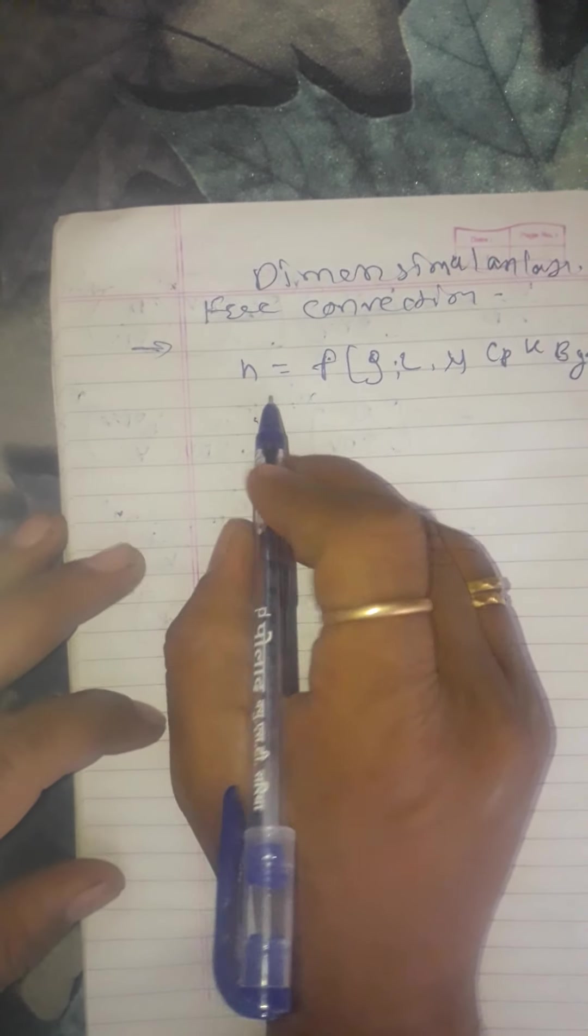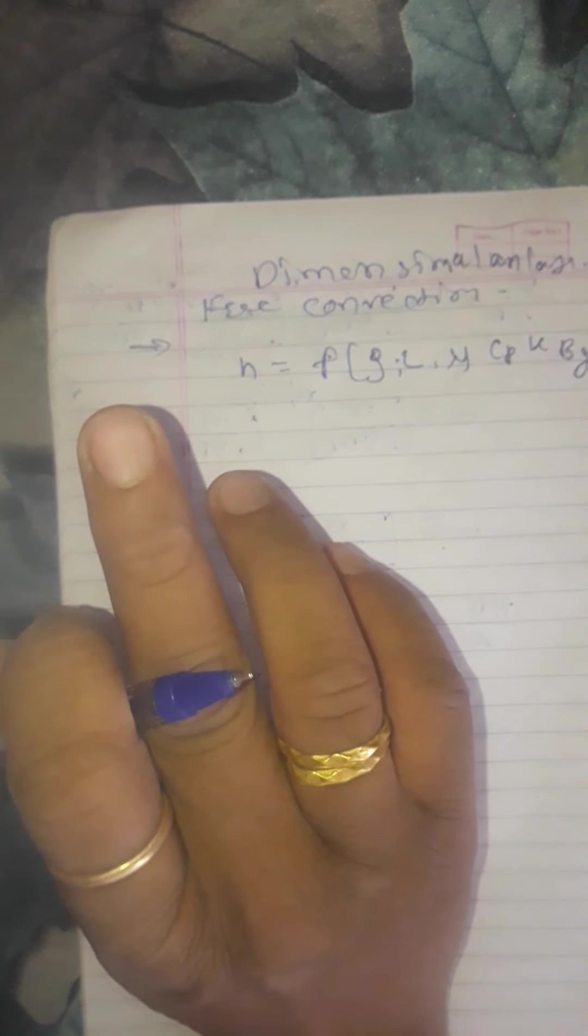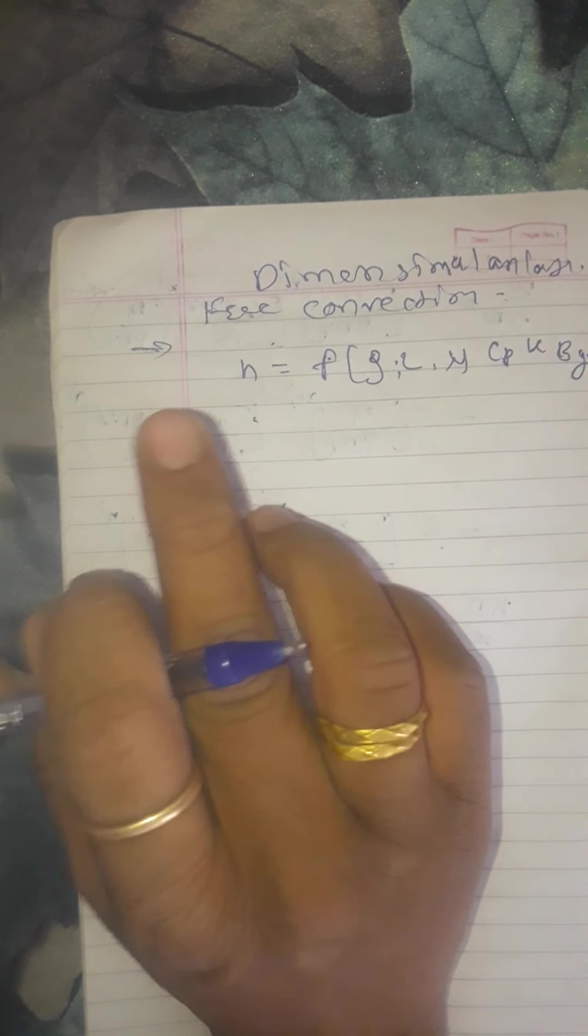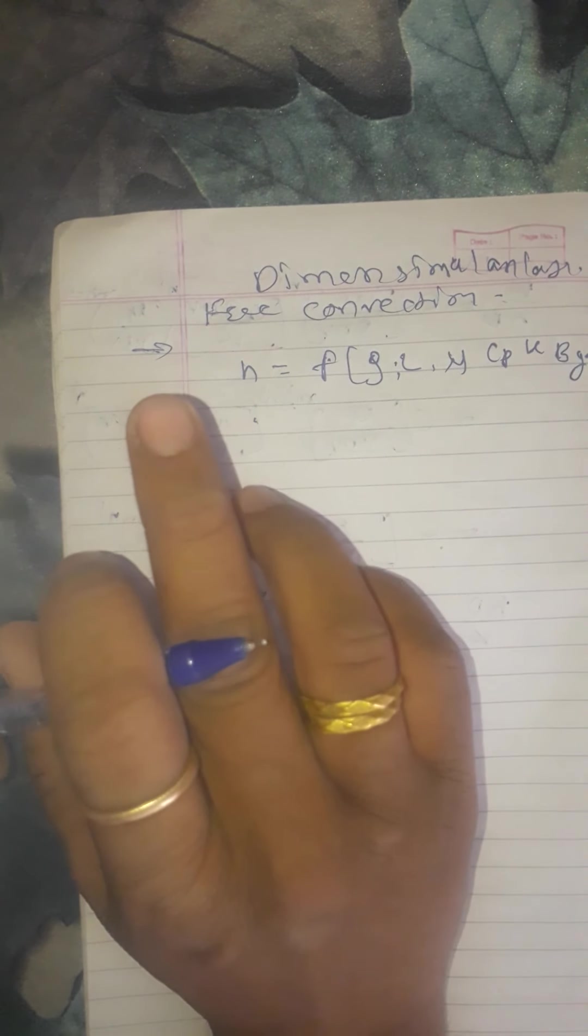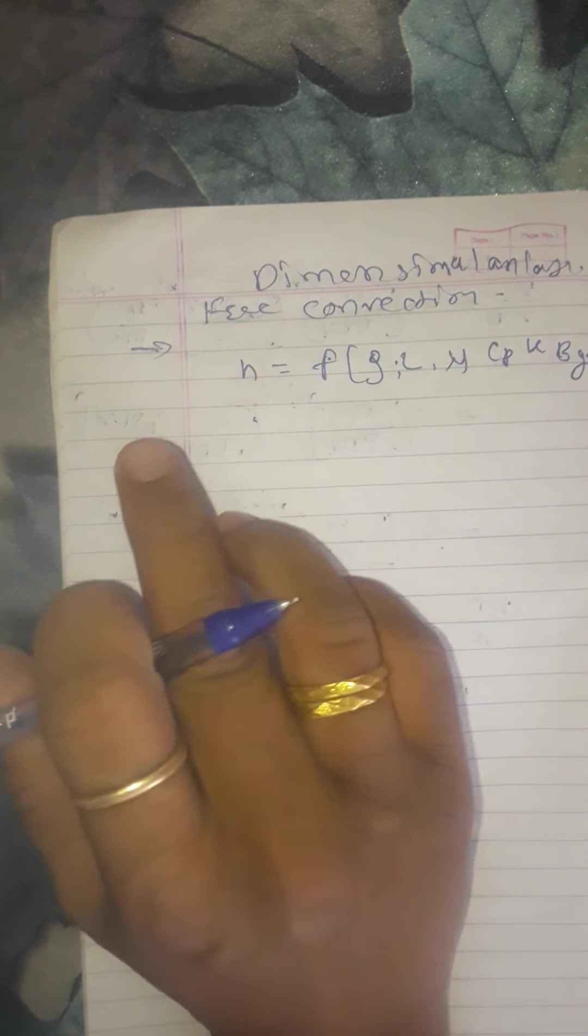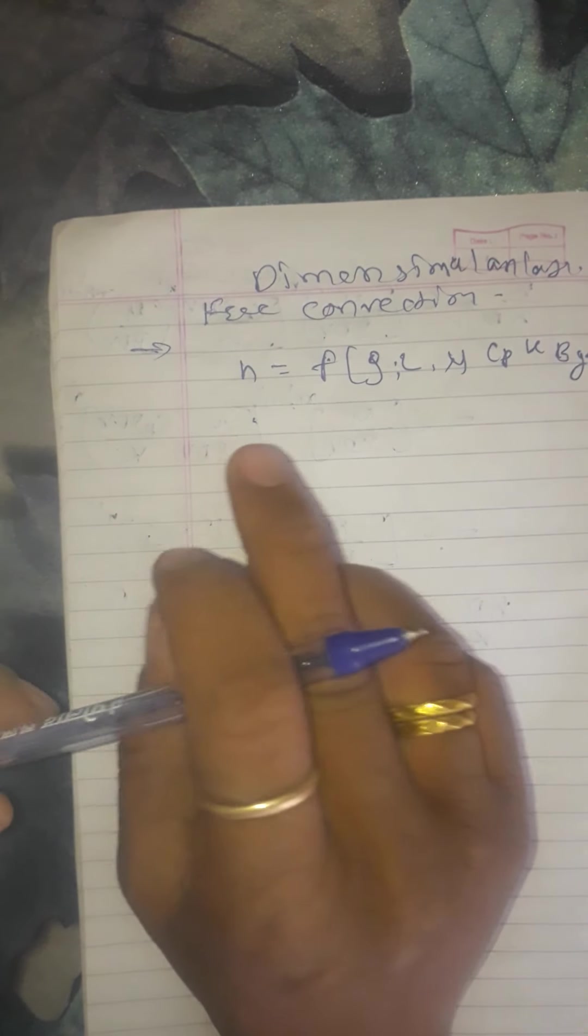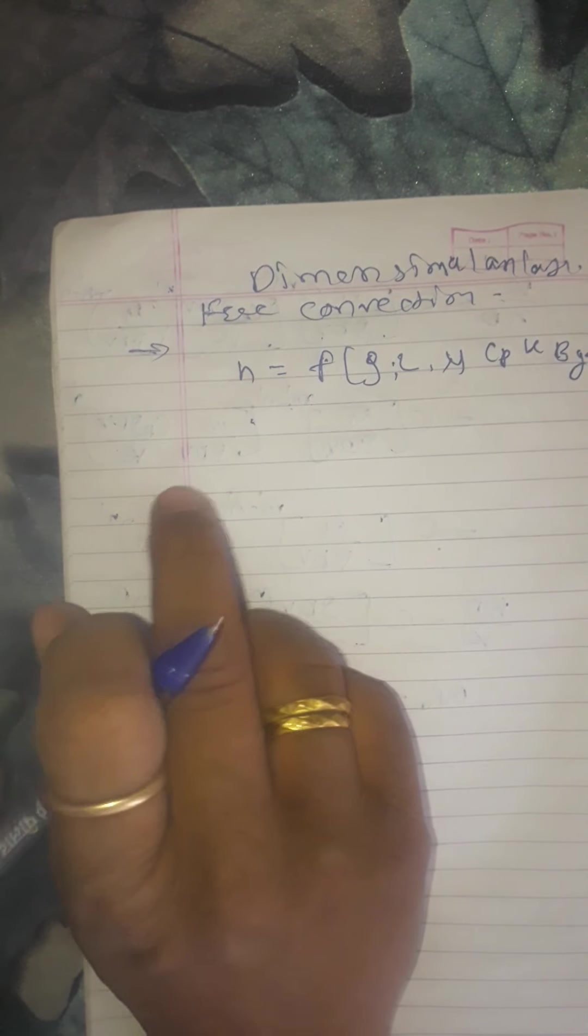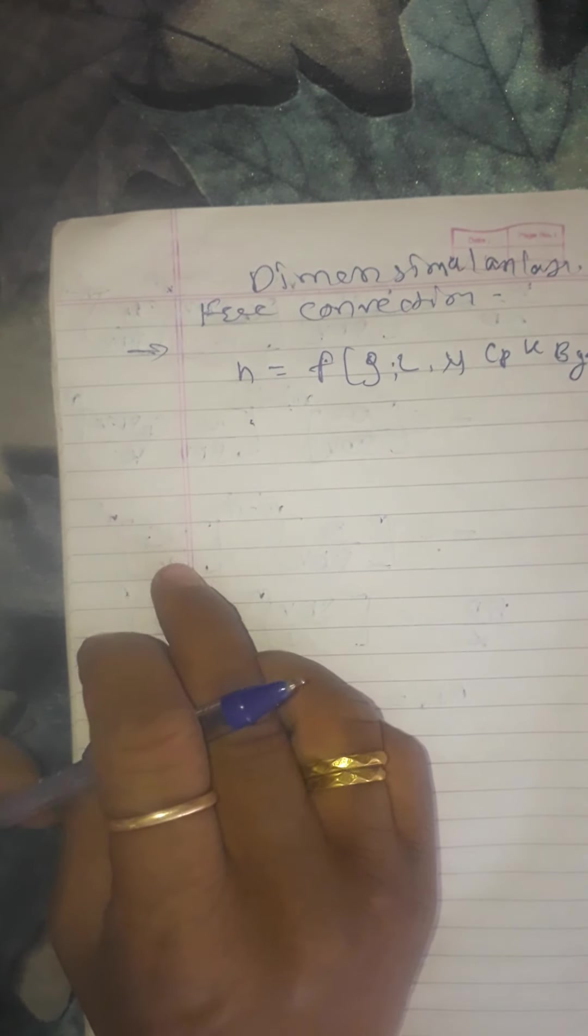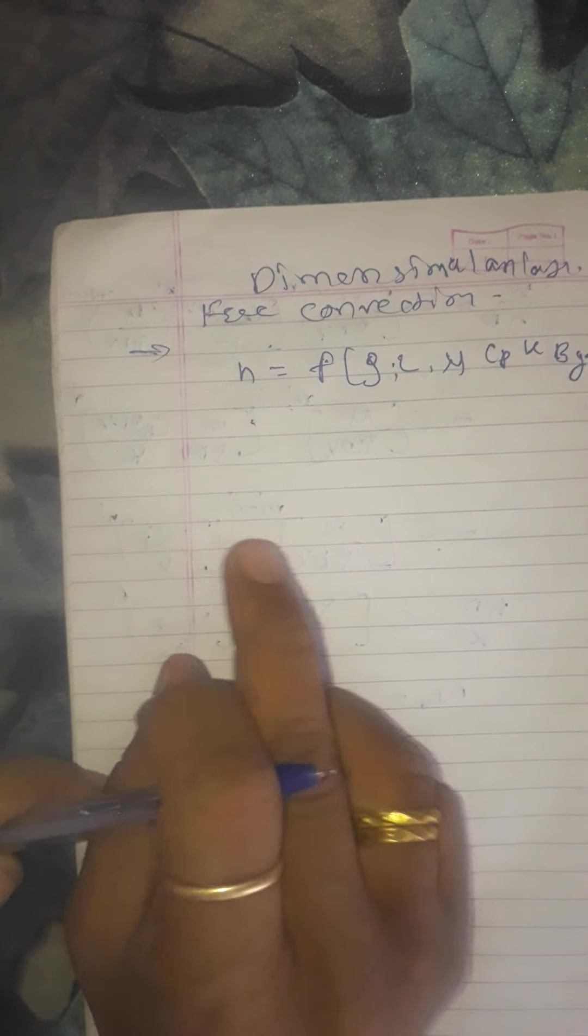The heat transfer coefficient in case of natural or free convection, like forced convection, depends upon various parameters. Since the fluid circulation in free convection is owing to difference in density between the various fluid layers due to temperature gradient and not by external agency.